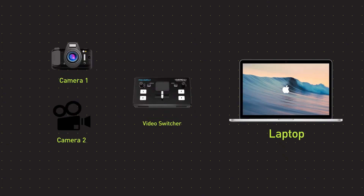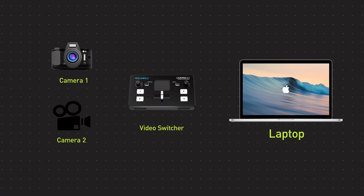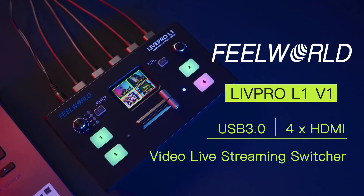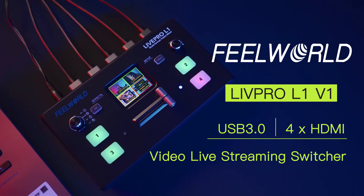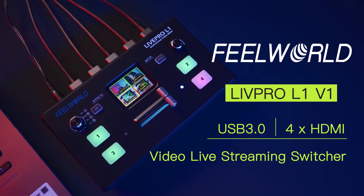In this video, I will be showing you how to add a picture-in-picture to your live stream using LivePro L1V1. Let's get started. It's a simple and easy but useful way. To do this, you need a laptop, one or two external cameras, and a video switcher. Here we set the LivePro L1V1 as an example.